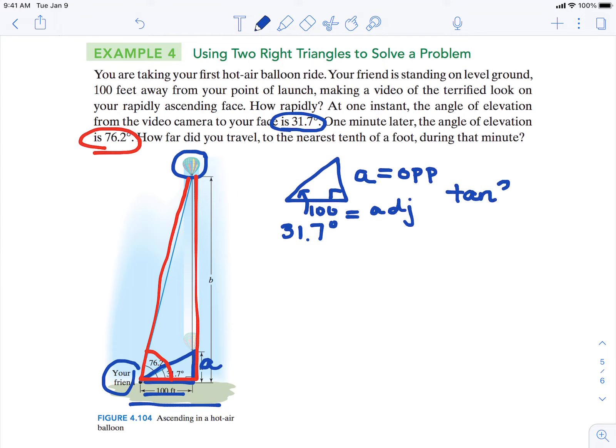So the tangent of 31.7 degrees equals opposite, which is A, over adjacent 100 feet. And now we're going to solve for A.